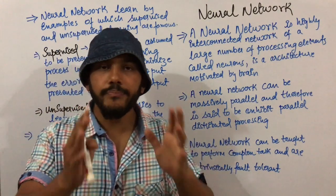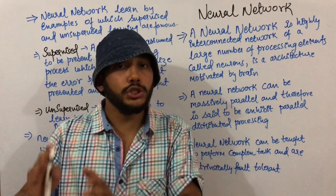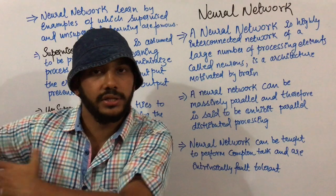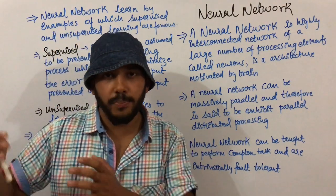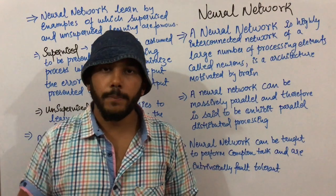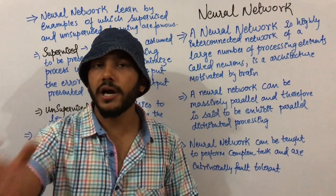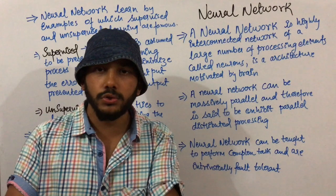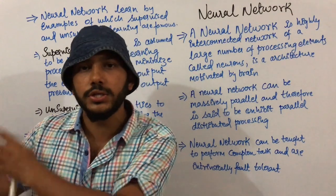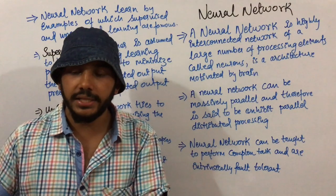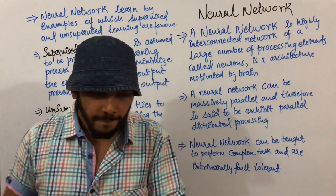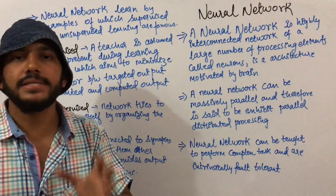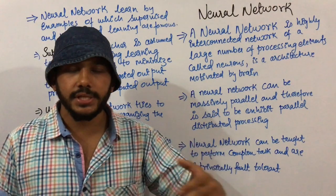Neural networks are highly motivated by how our brain works. The human brain has 10 to the power 10 neurons, and each neuron is connected to 10 to the power 4 other neurons. Input from one neuron is passed to another. For example, when you are sitting and suddenly touch a hot cup of tea, neurons at the tip of your fingers pass information to other neurons, and this connection works so rapidly that within nanoseconds you move your hand.